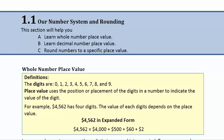Start with whole number place value. The digits — we use just 10 of these, the digits 0 through 9 — and with those 10 digits we can represent every number in our number system. We do that through place value. Place value uses the position or placement of the digits in a number to indicate the value of each of the digits.